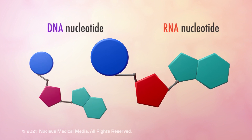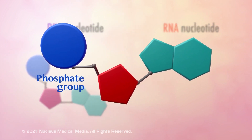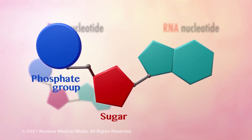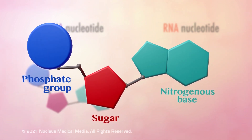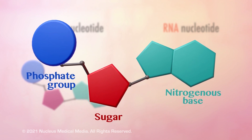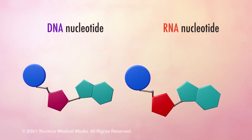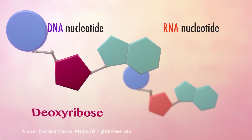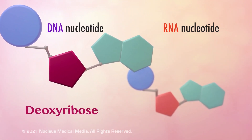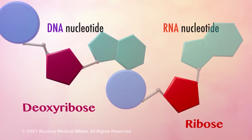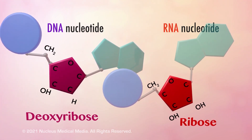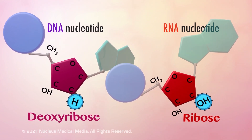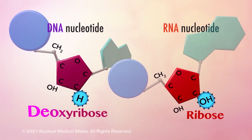Nucleotide monomers always contain a phosphate group, a 5-carbon sugar (sometimes referred to as a pentose), and a nitrogenous base. DNA nucleotides have the 5-carbon sugar deoxyribose, while RNA has a different 5-carbon sugar called ribose. The pentose sugar in DNA has one less oxygen than ribose in RNA, which leads to its name deoxyribose.